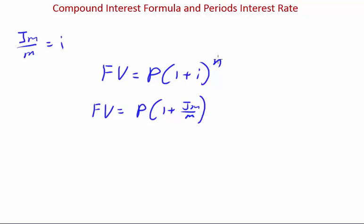Close bracket. Now, instead of putting it to the power of n, which is just the number of years, I want you to multiply n by m. What is m again? The number of periods in a year.